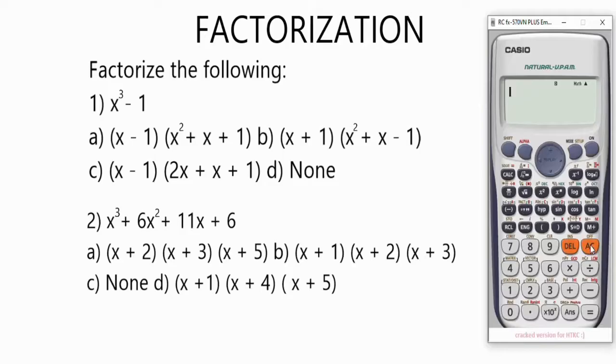Question 1 asks us to factorize x³ - 1. Go ahead and input x³ - 1. To bring x on the calculator you press Alpha, X. For x³ press Shift, x² button. Then minus 1. Let's press equals and see what it's going to give us.